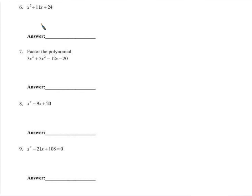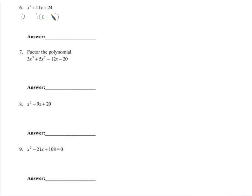x squared plus 11x plus 24 — we know it's going to break into factors. x times x gives x squared. We need two numbers that multiply together to make 24 and also add up to 11x when distributed. So two numbers that multiply to 24 and add to 11 — two positive numbers. 6 and 4? No, that adds to 10. 8 and 3: 8 times 3 is 24, and 8x plus 3x adds to 11x. So that's the final answer: x plus 8 times x plus 3.